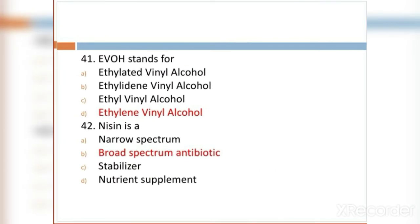MCQ 41: EVOH stands for: Option A: ethylated vinyl alcohol. Option B: ethylidene vinyl alcohol. Option C: ethylvinyl alcohol. Option D: ethylene vinyl alcohol. Option D is the right answer.